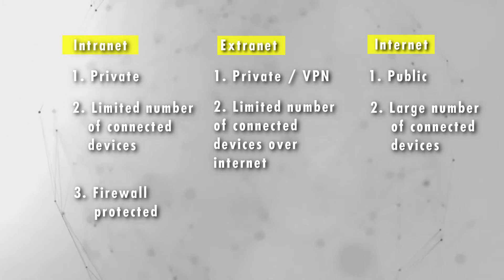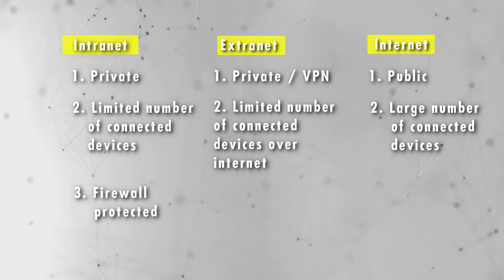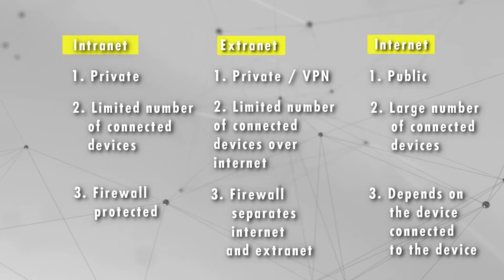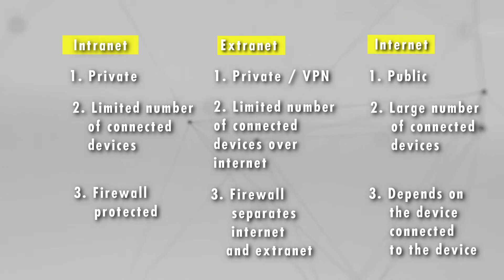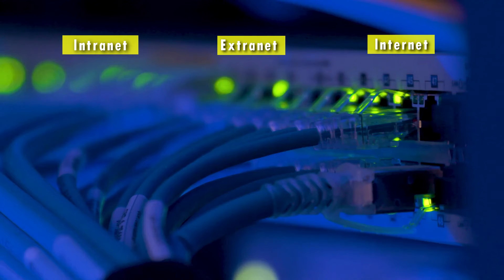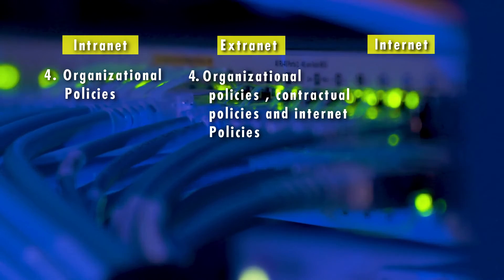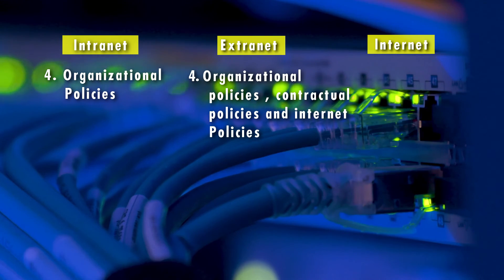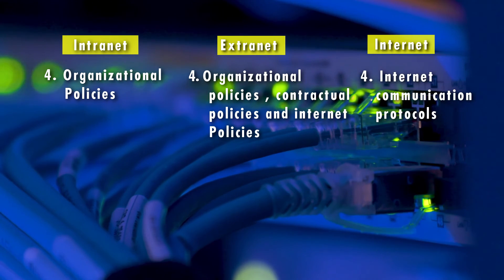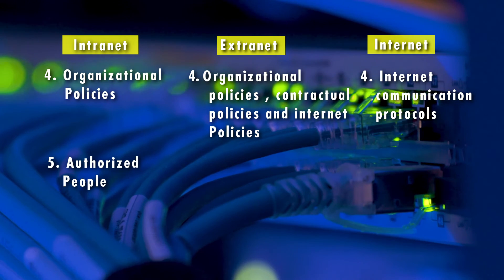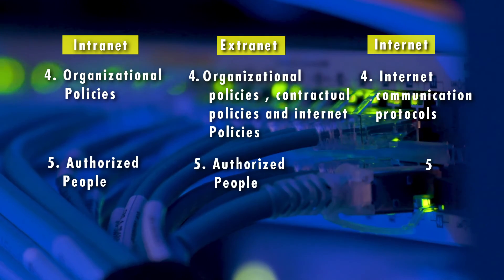But a large number of device connections are possible through internet. Intranet is firewall protected. A firewall separates intranet and extranet, but the security on the internet depends on the device connected. Intranet follows organizational policies, extranet follows organizational and contextual policies, but internet follows internet communication protocols. Intranet and extranet are accessed by authorized people, but anyone can access internet.